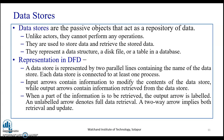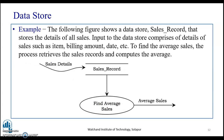A data store is represented by two parallel lines containing the name of the data store. Each data store is connected to at least one process. Input arrows contain information to modify the contents of the data store, while output arrows contain information retrieved from the data store. When part of the information is to be retrieved, the output arrow is labeled. An unlabeled arrow denotes full data retrieval, and a two-way arrow implies both retrieval and update.